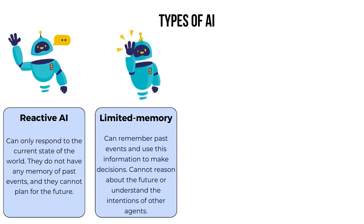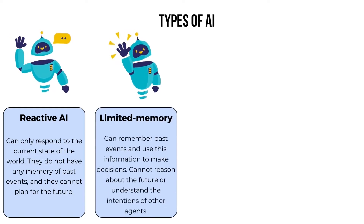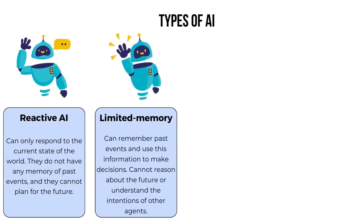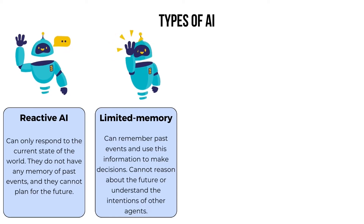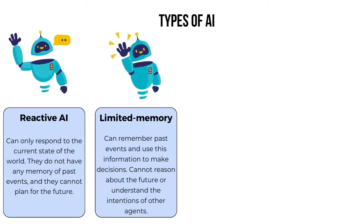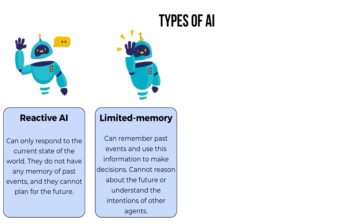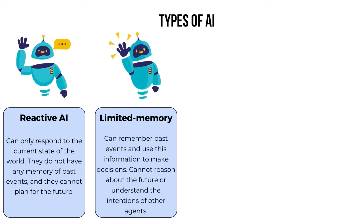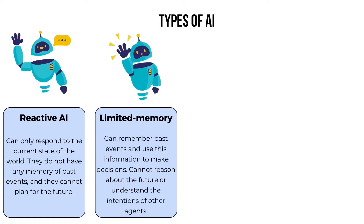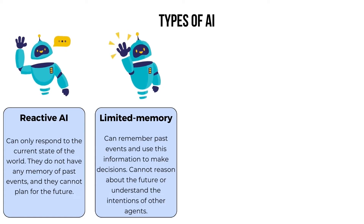The second type of AI is limited memory AI. These systems can remember past events and use this information to make decisions. However, they cannot reason about the future or understand the intentions of other agents.